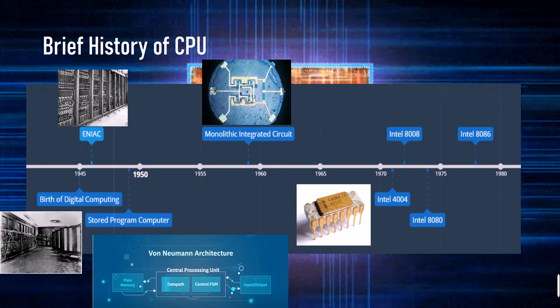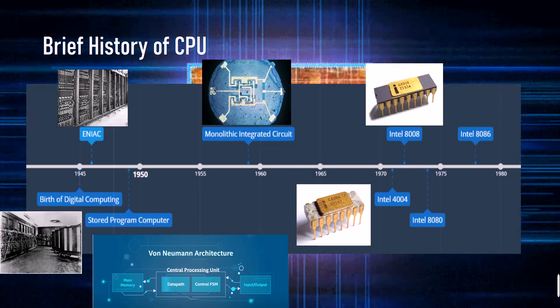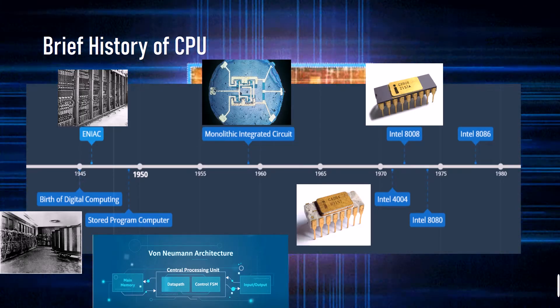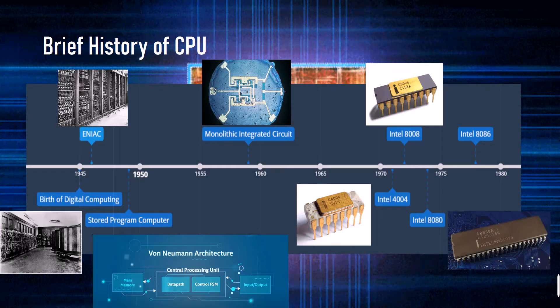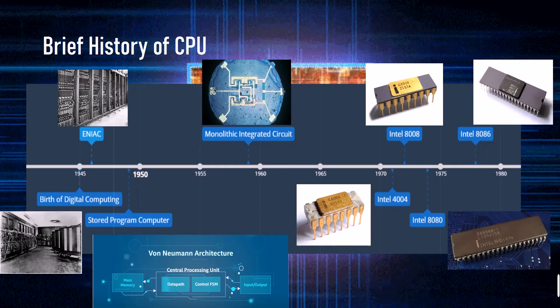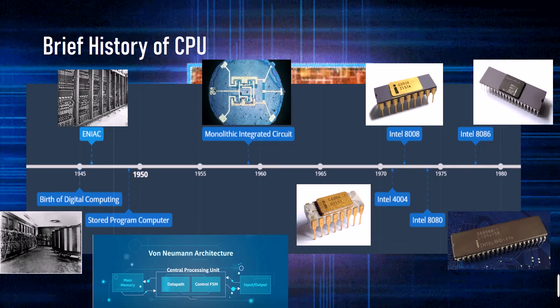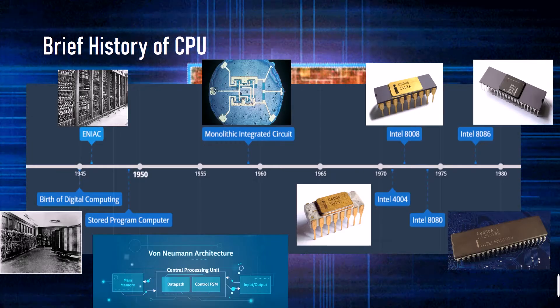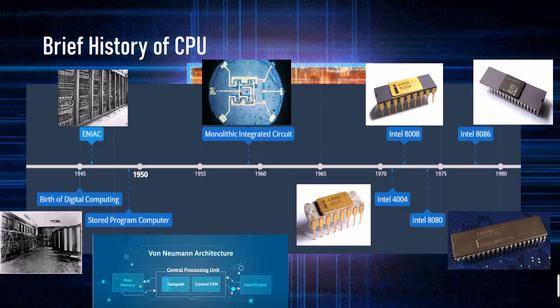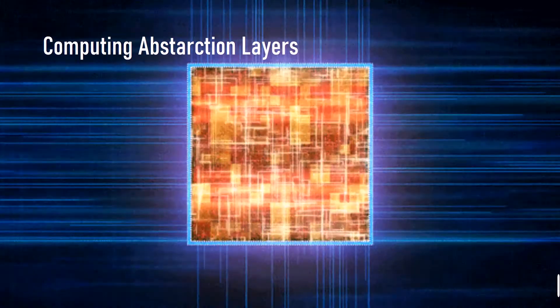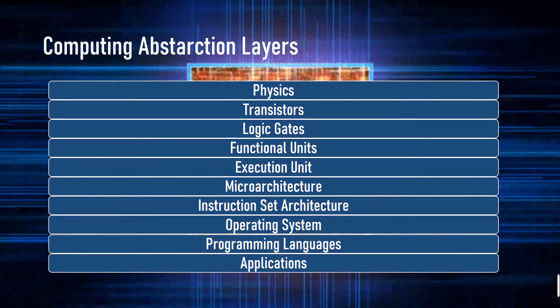Then on year 1956, the monolithic integrated circuit was created by Robert Noyce. Intel 4004 was developed on year 1971, followed by an 8-bit microprocessor called Intel 8008 on 1972, in which its successor is the Intel 8080 on year 1974. And the 8086 on 1978 with 16-bit and has x86 instruction set architecture.